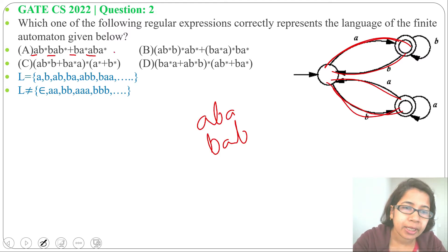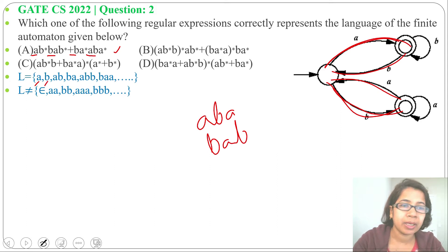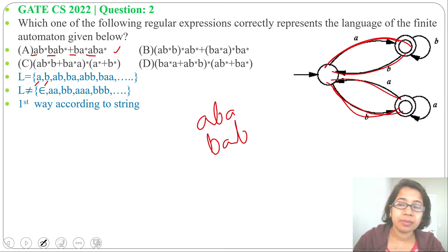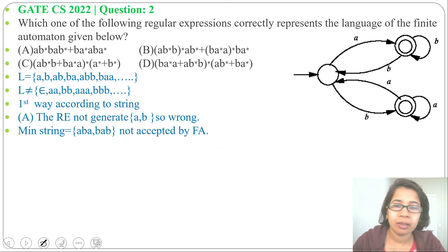But this regular expression will not generate single A or single B. That's why option A is wrong — it is not the regular expression for this NFA, as it cannot generate the minimum strings A or B.